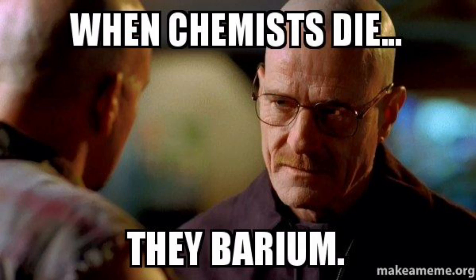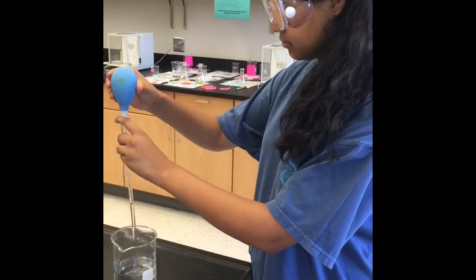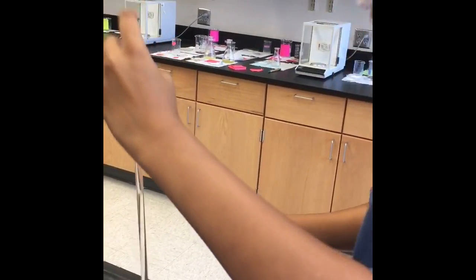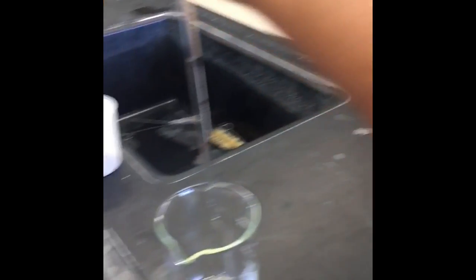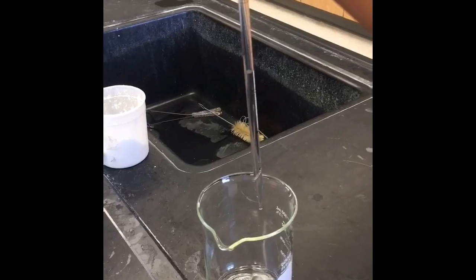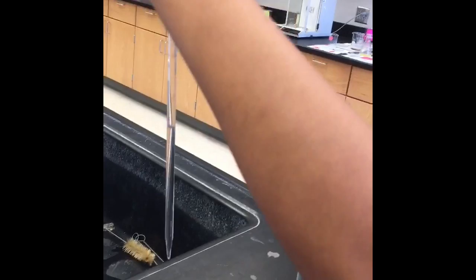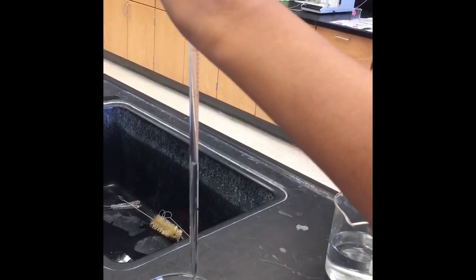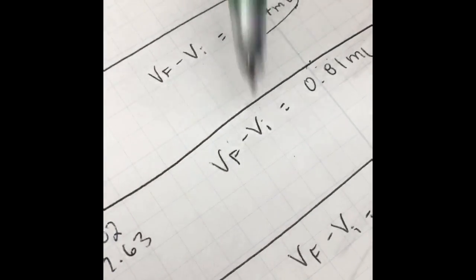Now let's see how Deepa conducts the experiment. The initial volume is 1.82. Ready? The final volume is 2.63. This is the transfer volume, 0.81 milliliters. We found this by subtracting the final minus the initial.